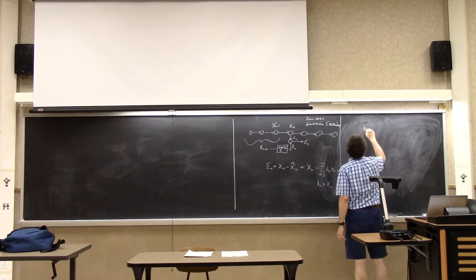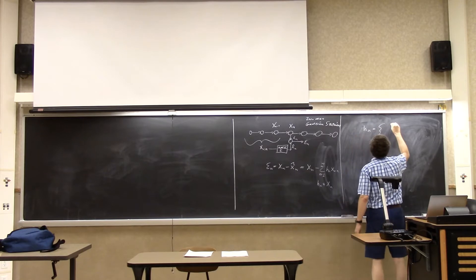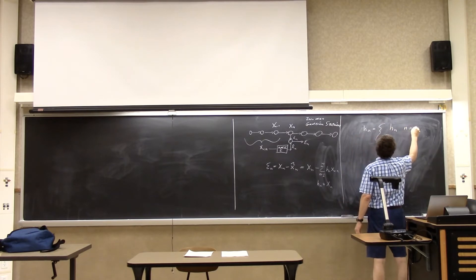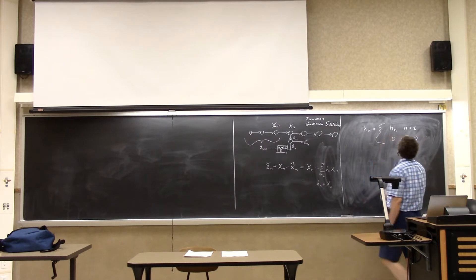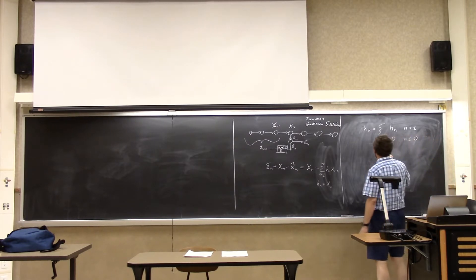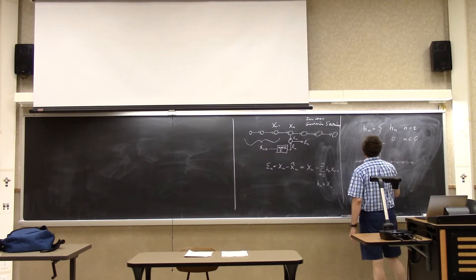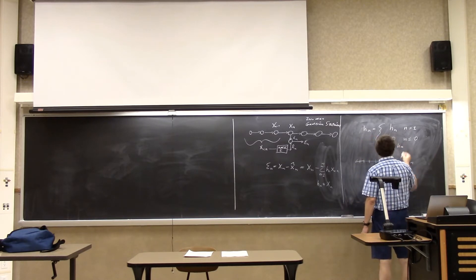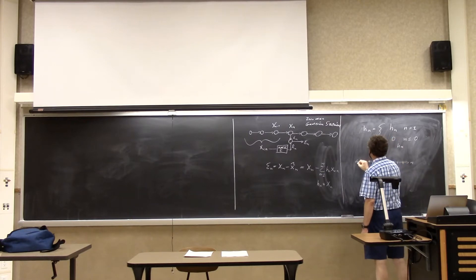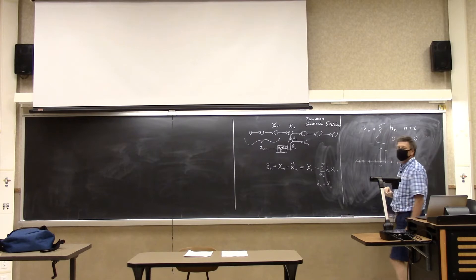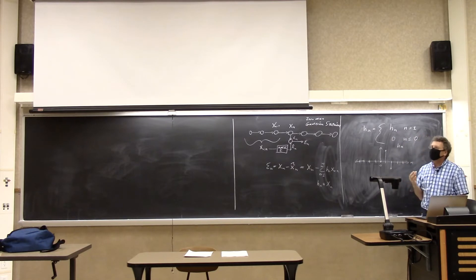h(n) is nonzero for n greater than or equal to 1, and equals 0 for n less than or equal to 0. So h(n) is some causal function. At time 0 it's 0; over here it's something. It turns out it can't be just anything — there are going to be some constraints, but we don't know what they are right now.